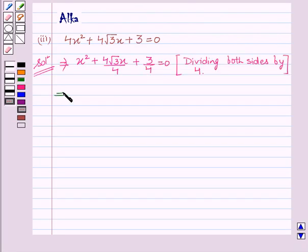This implies x square plus 4 root 3x by 4, 4 cancel out, equal to minus 3 by 4. We have shifted the constant term to the right hand side.